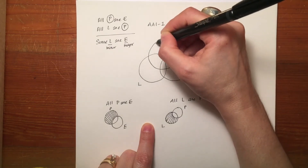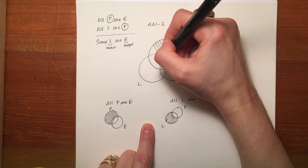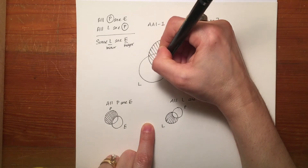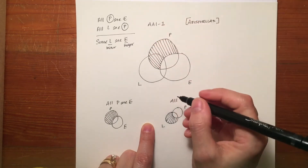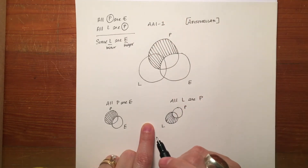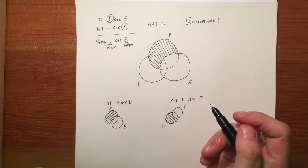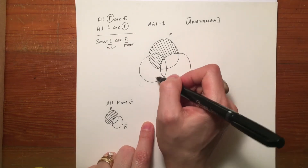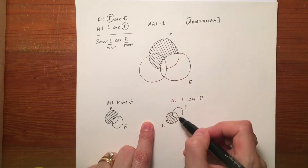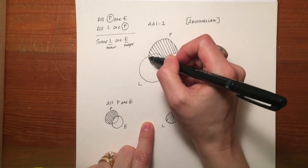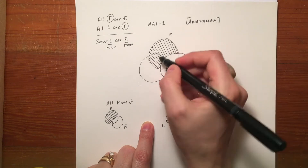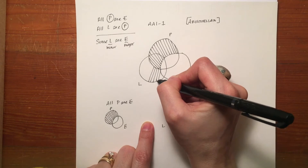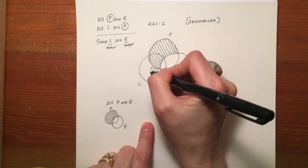Because I am working with universal premises and I have two of them, it doesn't matter that I entered one in first. For 'All L are P,' all members of L are members of P, so I want to shade out all the members of L that are not important. I'm going to shade out everywhere in L that is not also in P.